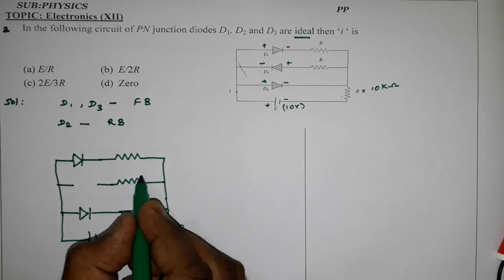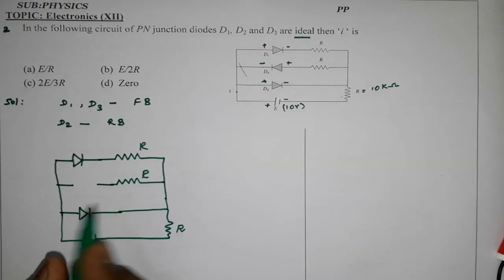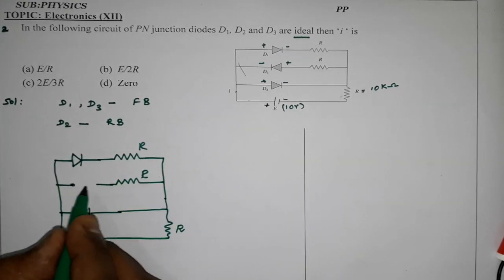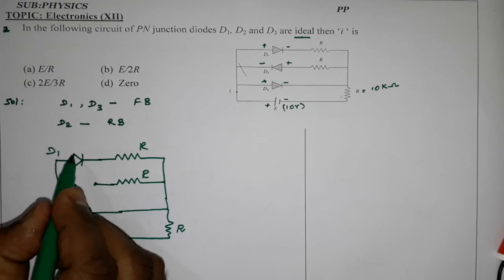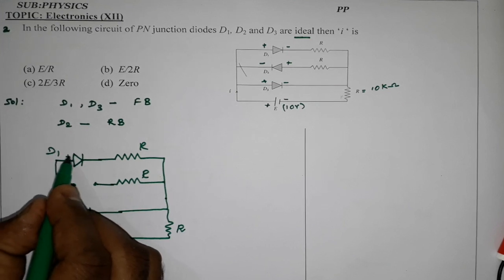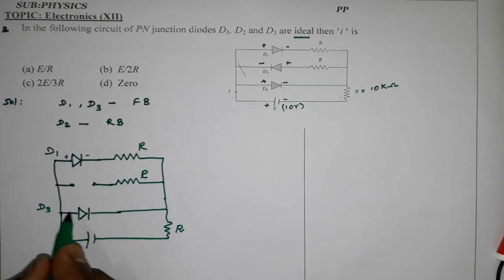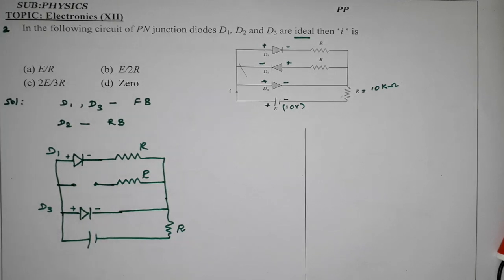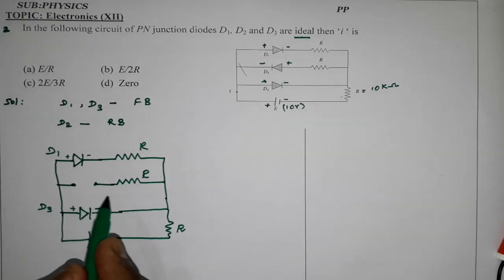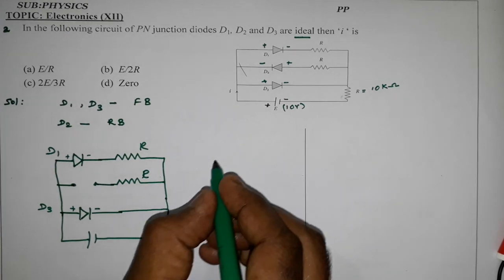The diode resistance value is R and this path is disconnected. D1 is forward bias and D3 is forward bias. We will cut this circuit to draw the equivalent circuit.